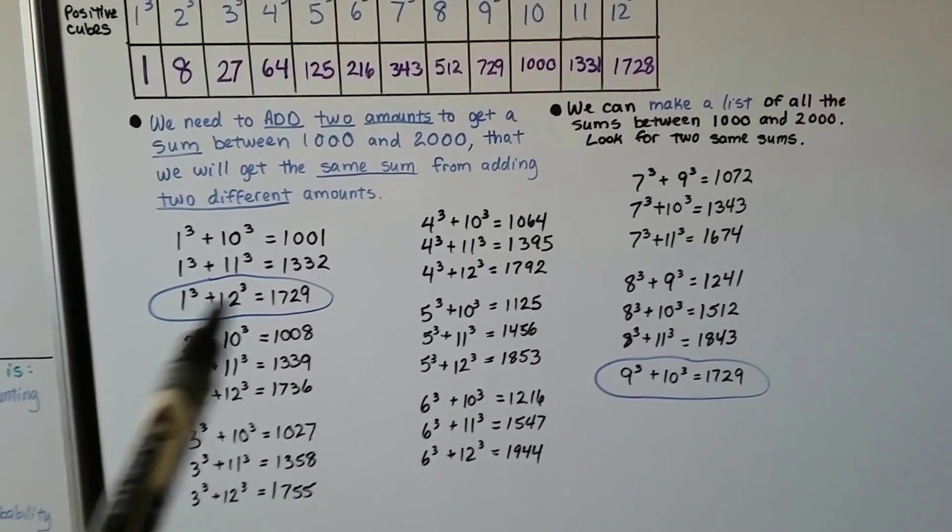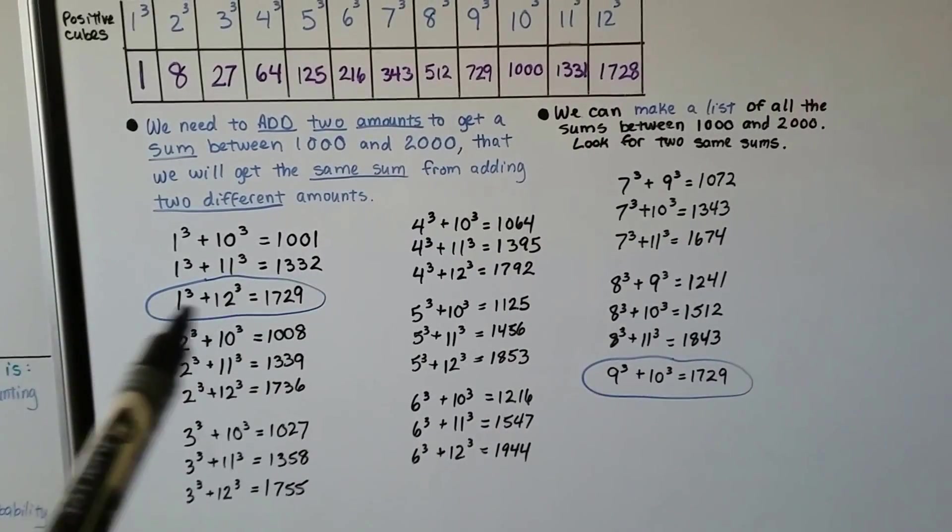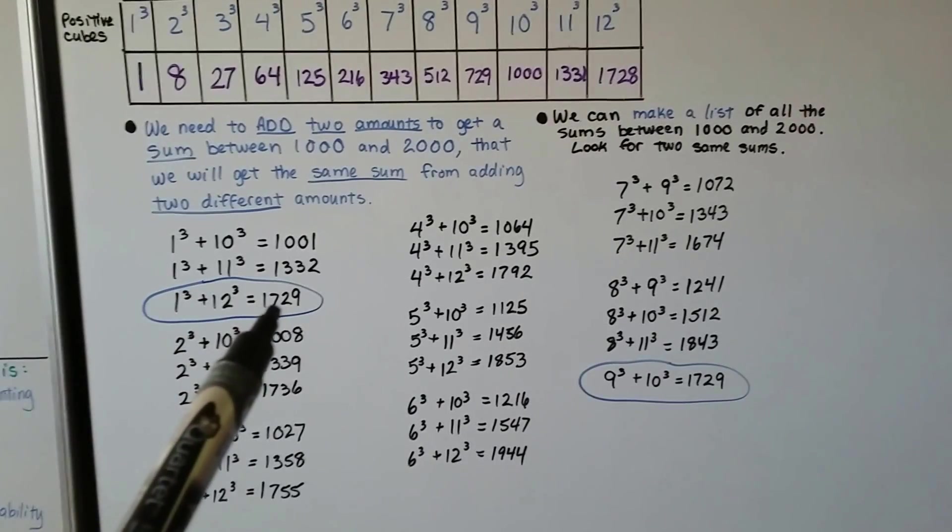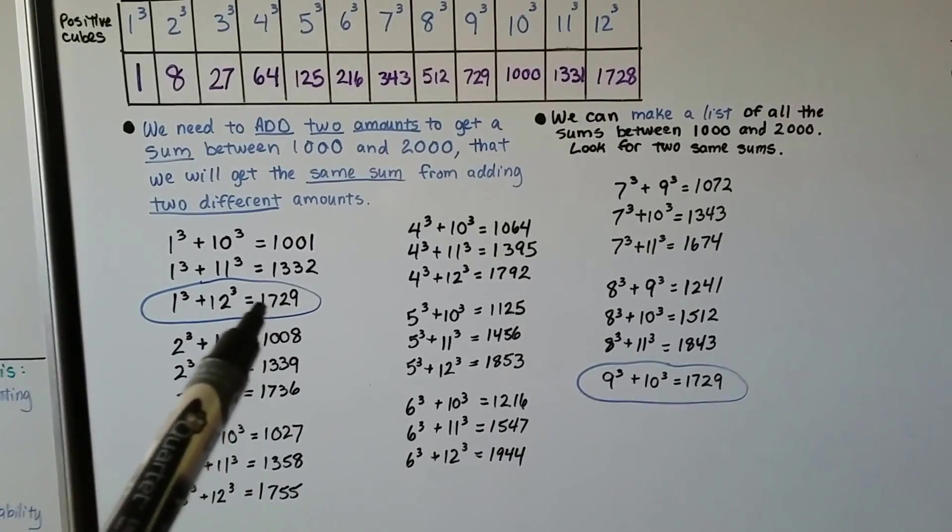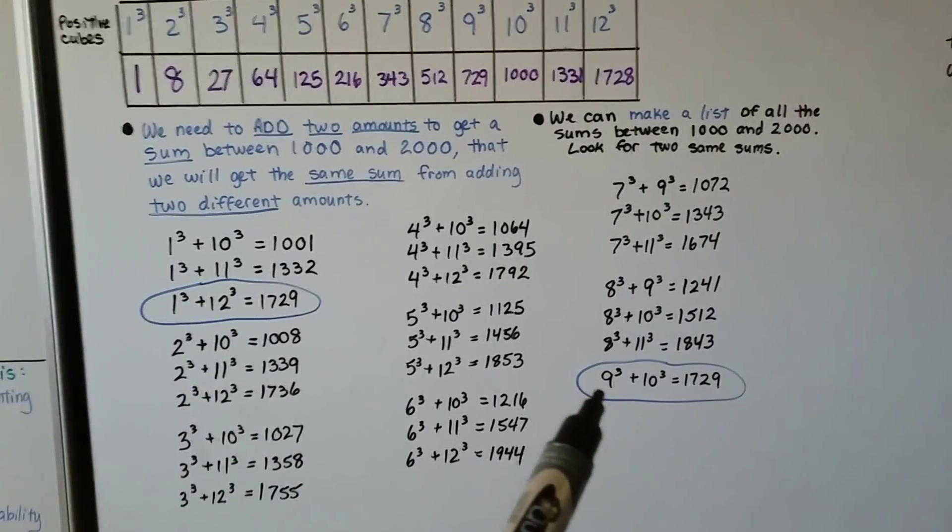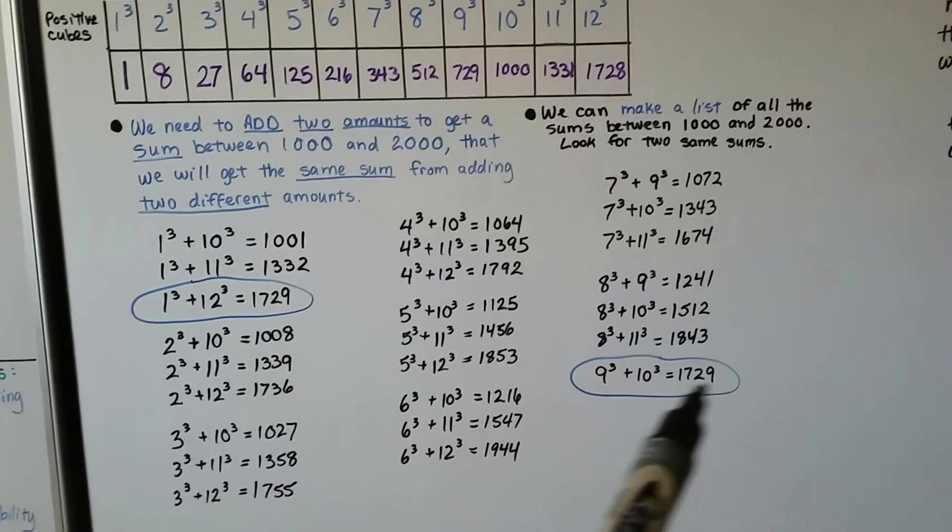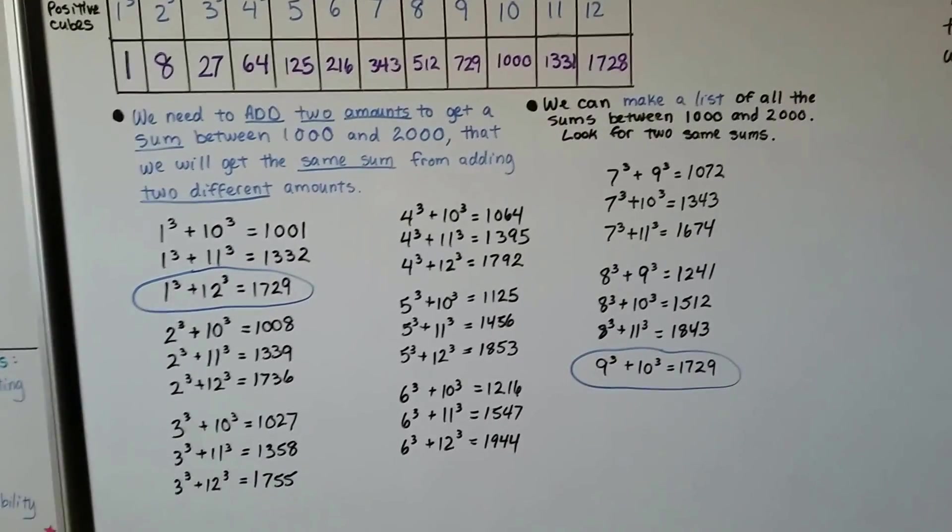So I tried to find sums that would land me between 1,000 and 2,000, and I came up with these. And the two that I got were 1 cubed plus 12 cubed, that gave me 1,729 for the access code. And if I add 9 cubed plus 10 cubed, I get 1,729 for the access code.